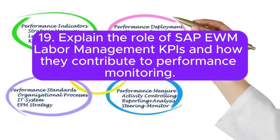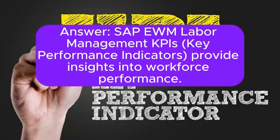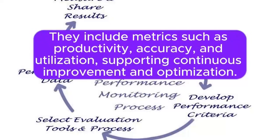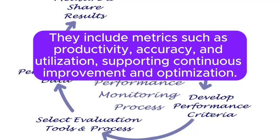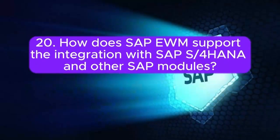Question 19: Explain the role of SAP EWM labor management KPIs and how they contribute to performance monitoring. SAP EWM labor management KPIs (Key Performance Indicators) provide insights into workforce performance. They include metrics such as productivity, accuracy, and utilization, supporting continuous improvement and optimization.